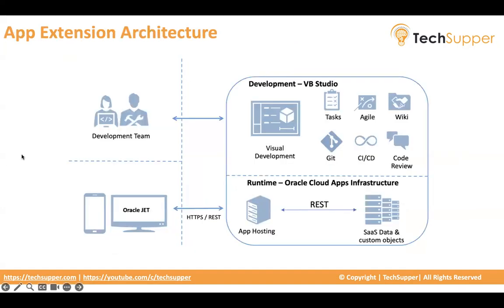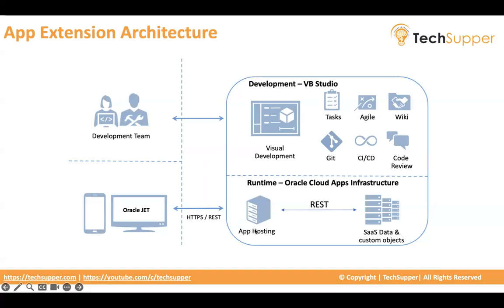This is how your App Extension architecture looks. You have the development environment, VB Studio, which your development team has access to. They can build pages using the visual development environment, create tasks, use the inbuilt Git repository for check-in and check-out, and maintain complete CI/CD. Managers can review code before it is published, and teams can maintain a wiki. Your runtime is your SaaS environment — your customization is hosted on the same environment as your Oracle SaaS and is developed via Oracle JET.